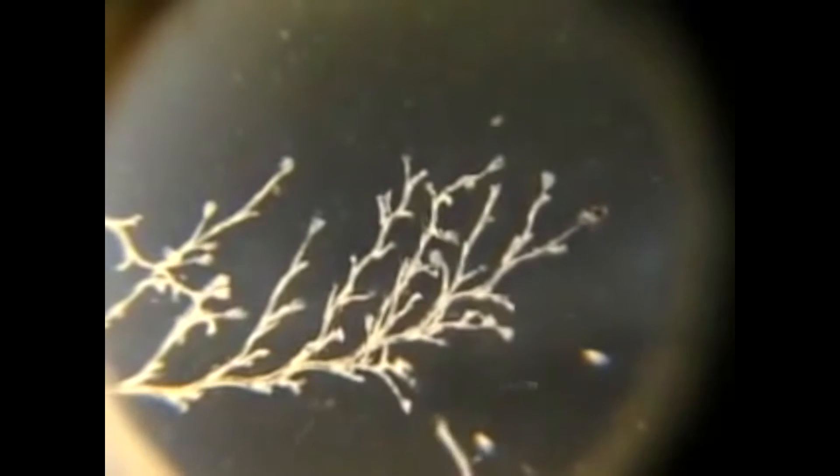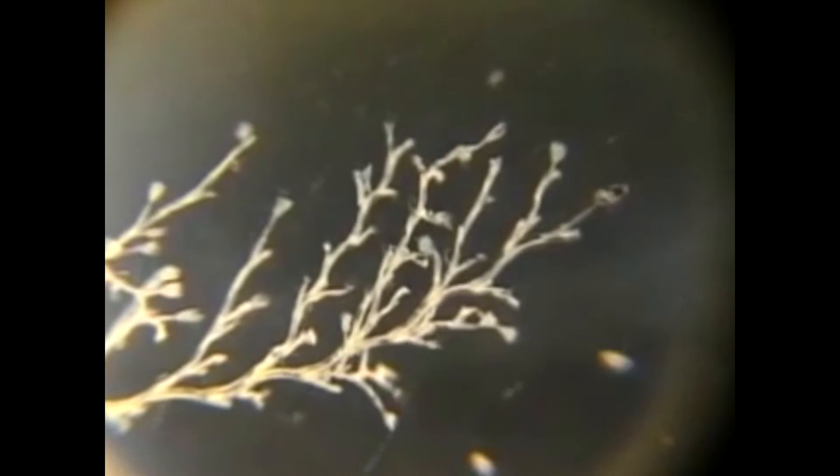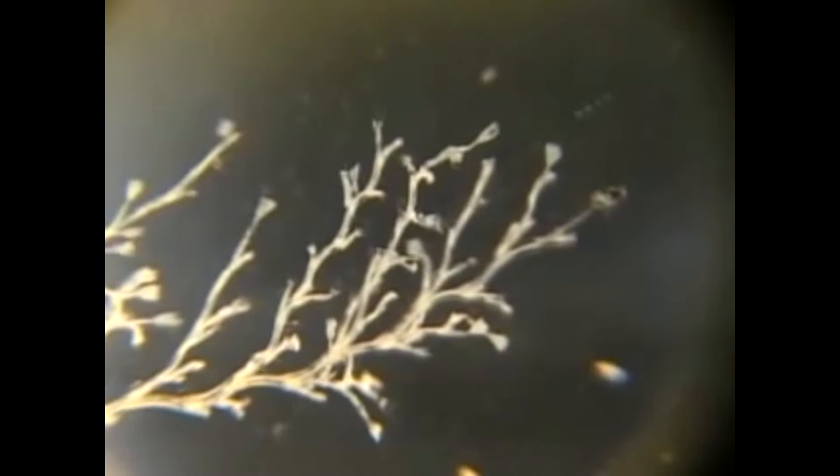Obelia live in oceans throughout the world. Though they may look like plants, in fact, they are animals. Obelia are members of the Hydrozoa class in the Cnidaria phylum.